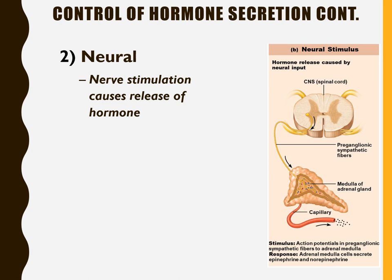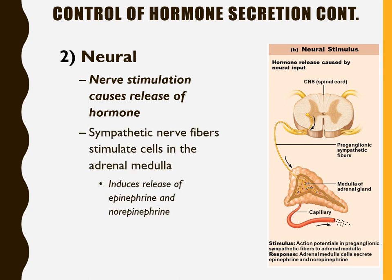The second type of control is neural control, where nerve stimulation from the nervous system causes a gland to release a hormone. For example, the sympathetic nervous system stimulates the adrenal medulla to secrete epinephrine and norepinephrine. The sympathetic system is our fight-or-flight system, so it directly stimulates the adrenal medulla to secrete epinephrine — our fight-or-flight hormone.